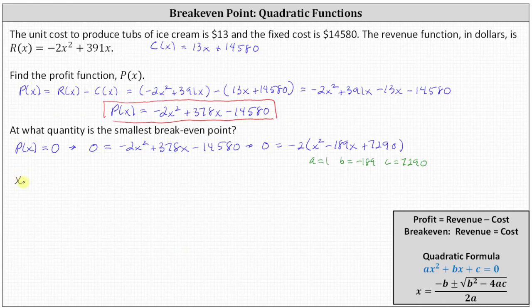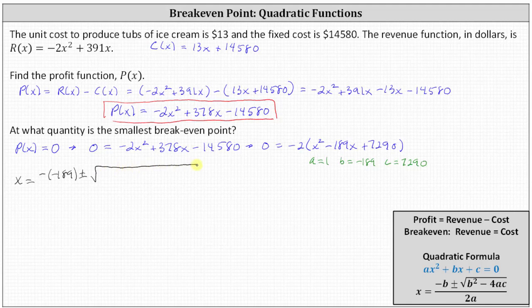So now using the quadratic formula, we have x equals, in the numerator we have negative b, which is negative negative 189, plus or minus the square root of the quantity b squared minus 4ac, where b squared is the square of negative 189, and then minus four times a, which is one, times c, which is 7290. And all of this is divided by two times a, which in our case is two times one.